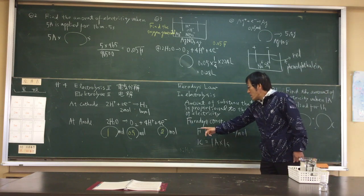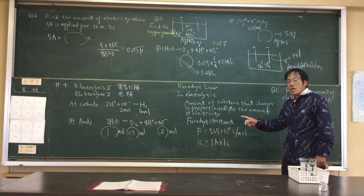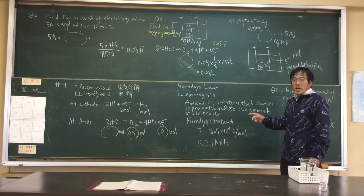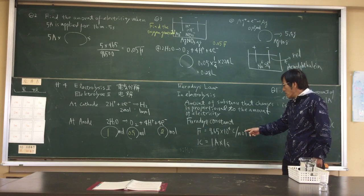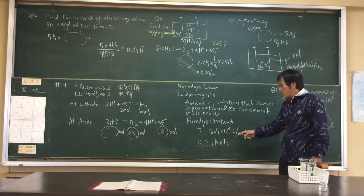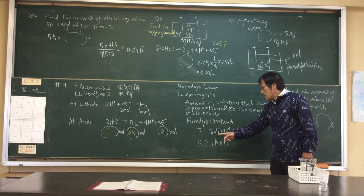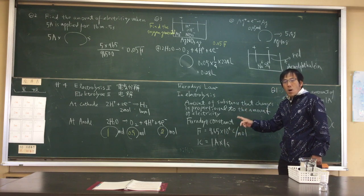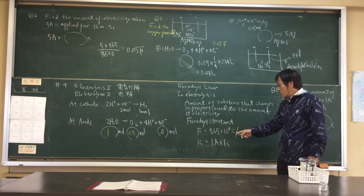Faraday constant. One faraday equals 9.65 times 10 to the 4 coulomb per mole. One coulomb equals 1 ampere times 1 second.